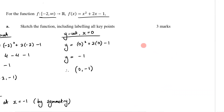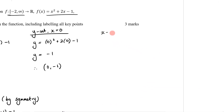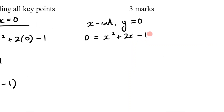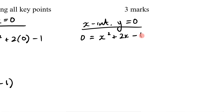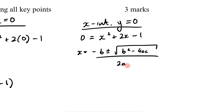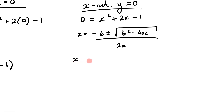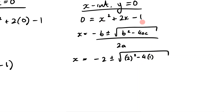Now I need to find the x-intercepts, which occur when y = 0. So 0 = x² + 2x - 1. I want to check if I can factorize: two numbers that multiply to -1 and add to 2 — that doesn't exist. So I'll use the quadratic formula: x = (-b ± √(b² - 4ac)) / 2a. Substituting values: x = (-2 ± √(2² - 4(1)(-1))) / 2(1).